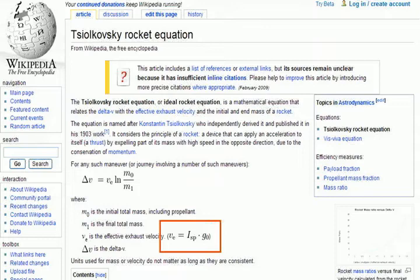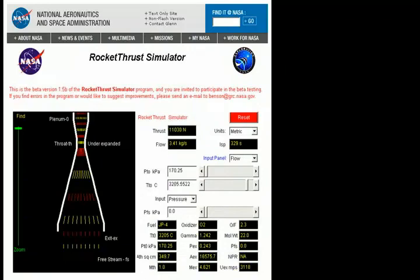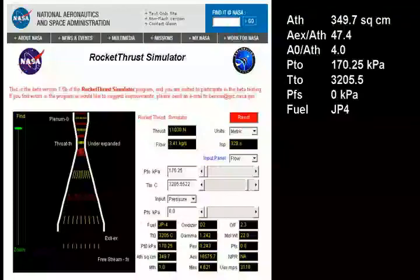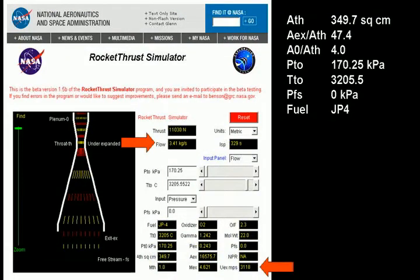First, let's visit the rocket thrust simulator on NASA.gov. This, or a similar widget, is probably where Gilliam got his numbers. If you plug in the values I list on the right, you get a rocket with about 11 kN thrust and a flow rate of 3.41 kg per second.